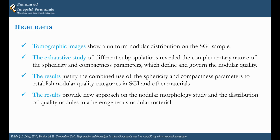As my conclusion, we can highlight that these images show a uniform nodular distribution. It was observed the complementary nature of ferricity and compactness parameters, and the combined use of both parameters to establish nodular quality categories. Finally, the results provide a new approach on quality nodules in the nodular material.